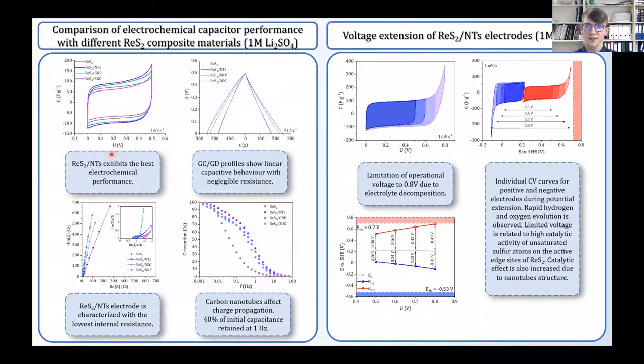Here you can see the comparison of electrochemical performances for each of these materials, and it occurs that the best performance was recorded for rhenium disulfide deposited on the nanotubes. Here specifically you can see that not only the capacitance was improved, but also the charge propagation properties.